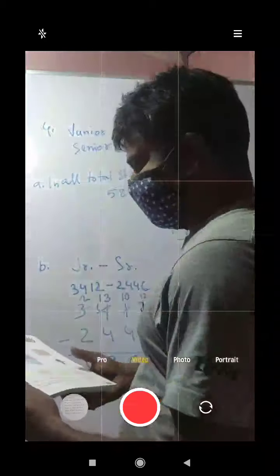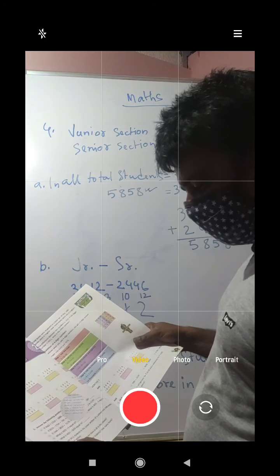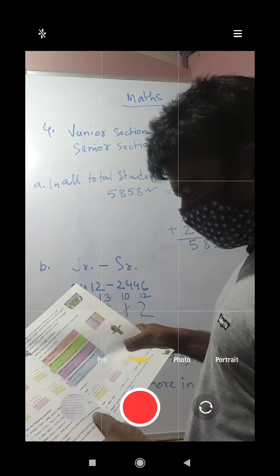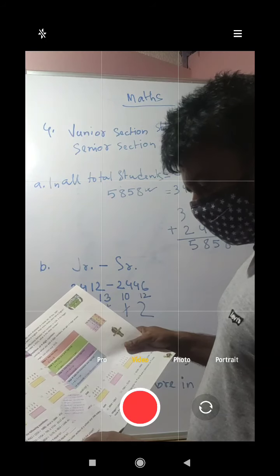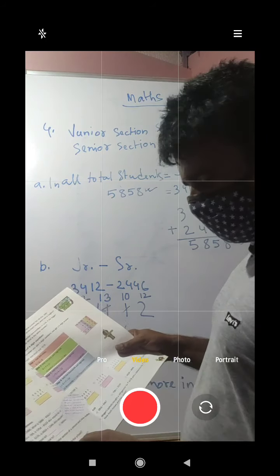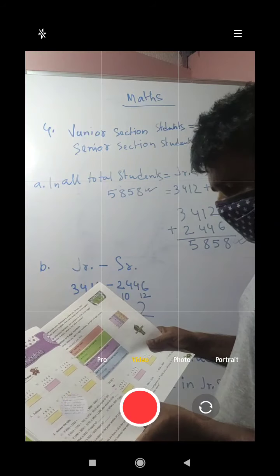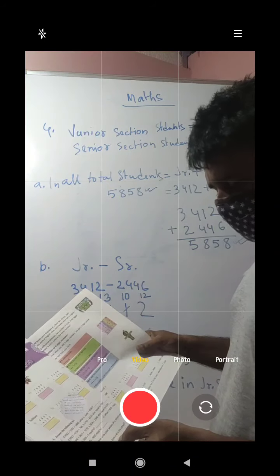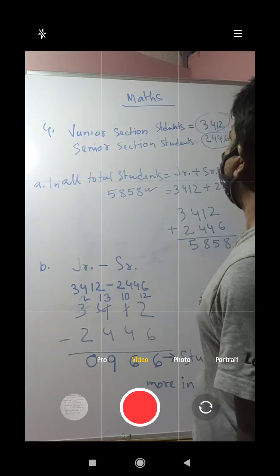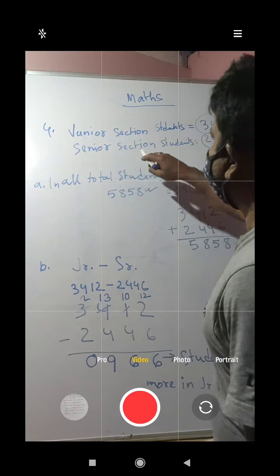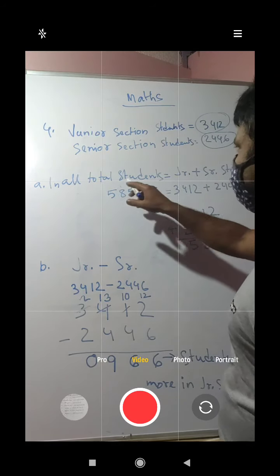Good morning, dear children. Today we will see maths, chapter 2, question number 4. It is given that there are 3412 students in the junior section of a school and 2446 students in the senior section. To find the total students in all, we need to add the junior section and senior section numbers. I have written the equation: junior section students is 3412, senior section students are 2446.